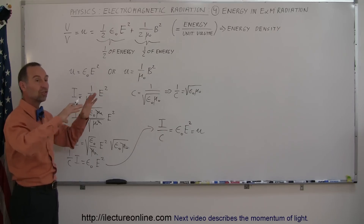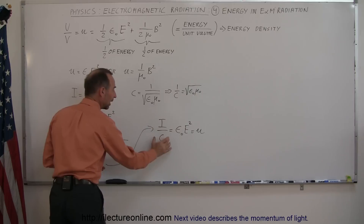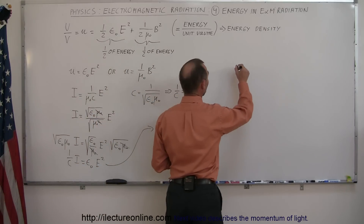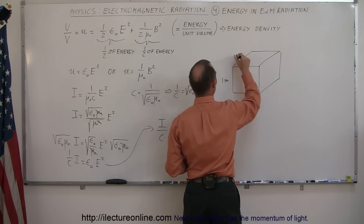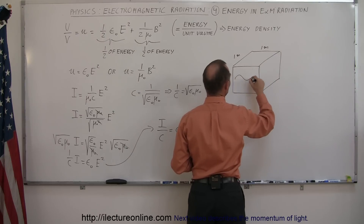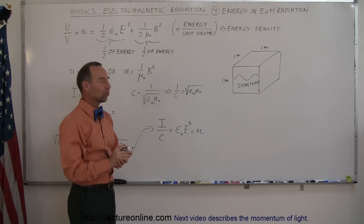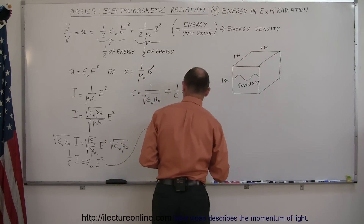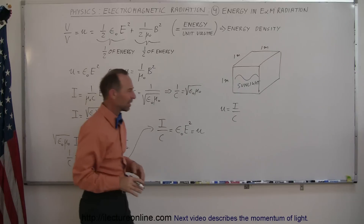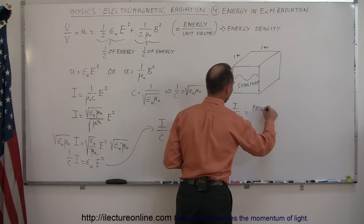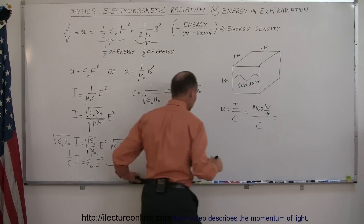To find how much energy is contained within a certain volume of space with electromagnetic radiation, we take the intensity and divide it by the speed of light. For example, let's find how much energy is contained within one cubic meter of sunlight — a cube one meter by one meter by one meter. The energy density u equals intensity divided by the speed of light. The intensity of sunlight is around 1,400 watts per square meter.